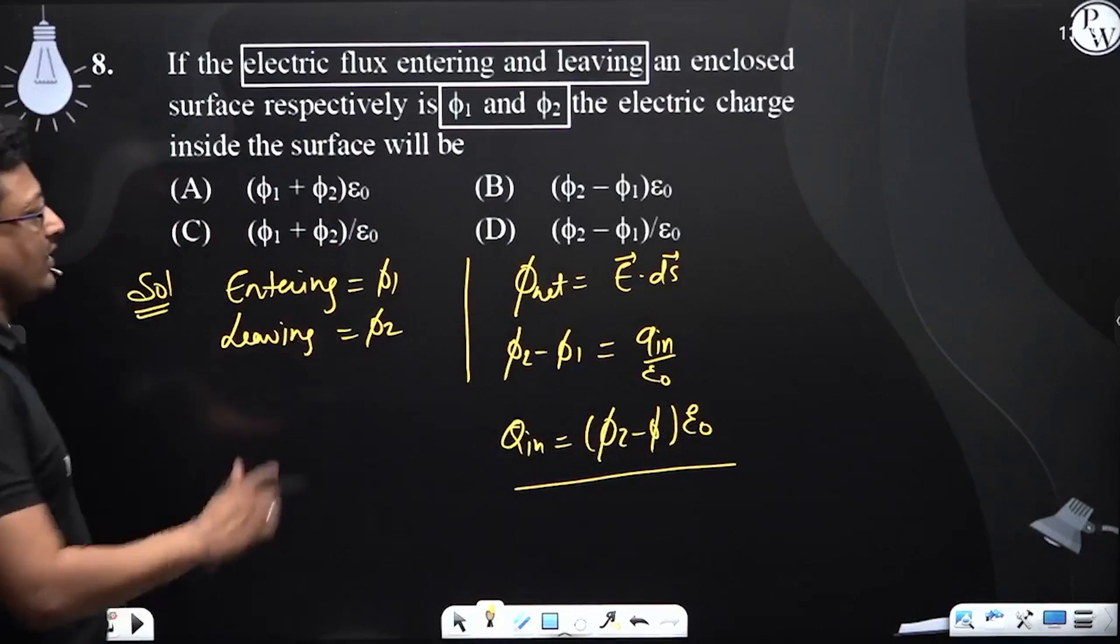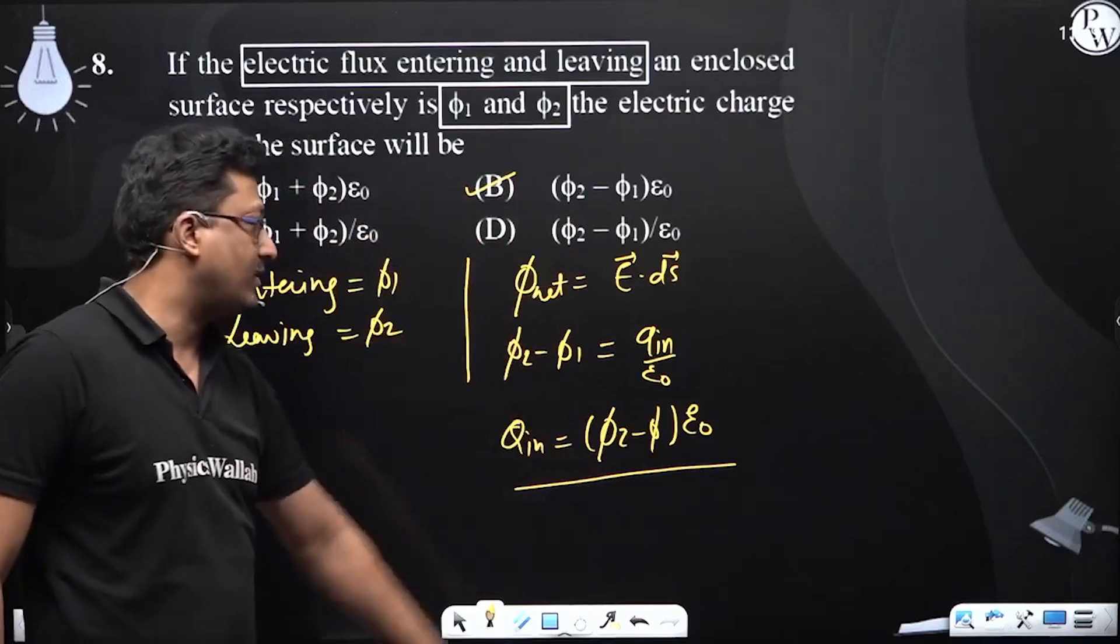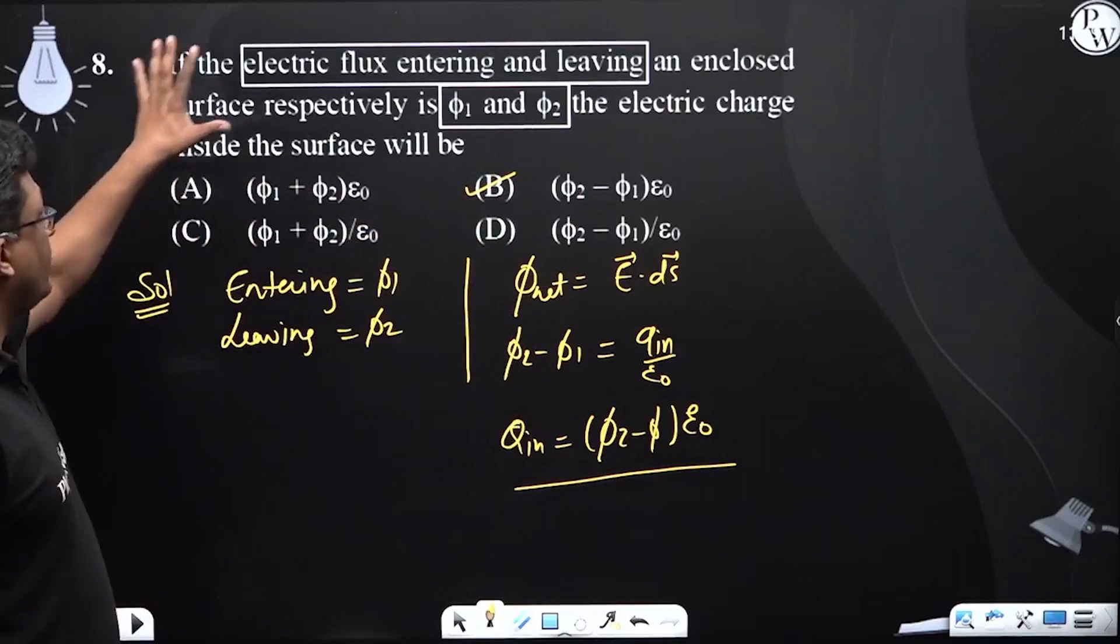If this will be net charge, then option number B: (5.2 - 5.1) × epsilon_0. This was question number 8.